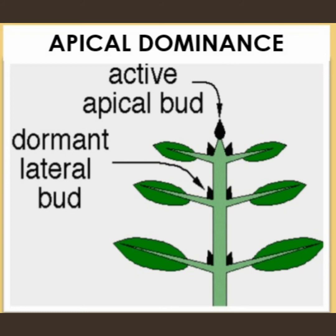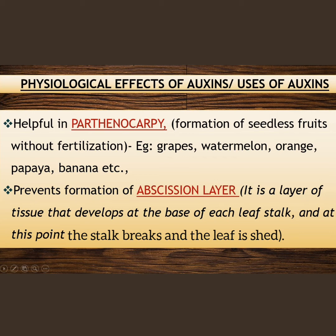Fourth point: auxins are helpful in parthenocarpy — the formation of seedless fruits without fertilization. Examples include seedless grapes and watermelon. Fifth point: auxins prevent the formation of the abscission layer. The abscission layer is a layer of tissue that develops at the base of each stalk, and at this point the stalk breaks and the leaf is shed.